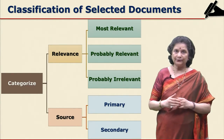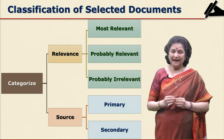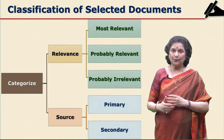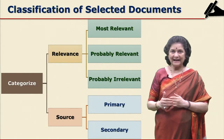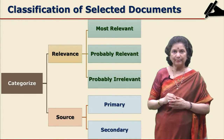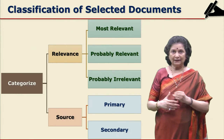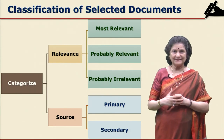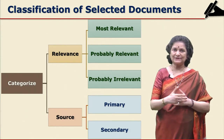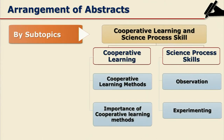When we consider the criteria of source for categorization, primary sources are the most important because they are the primary sources of research. Hence primary sources should be given supreme importance when you select or categorize the documents. Primary sources can be organized first in the arrangement as you have the abstracts of documents ready.